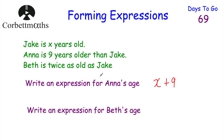For Beth, she's twice as old as Jake, so whatever age he is she's double it - we multiply by 2. We take his age which is X and multiply by 2, so that's 2X - double his age. So an expression for Anna's age is X plus 9, and an expression for Beth's age is 2X.